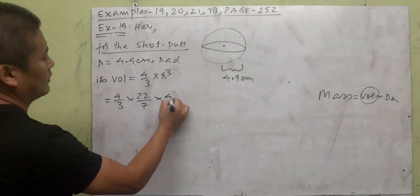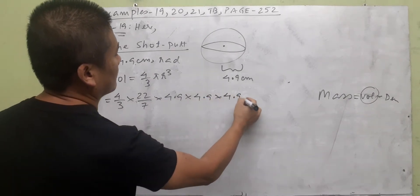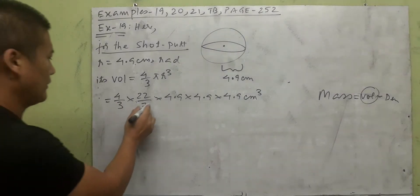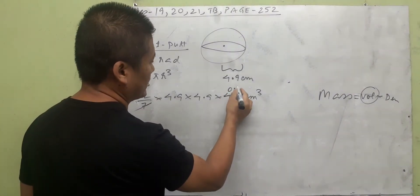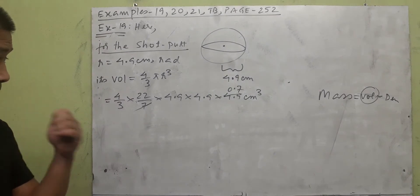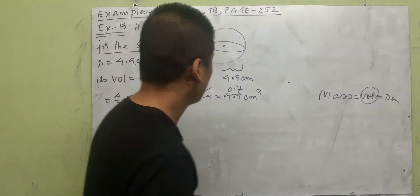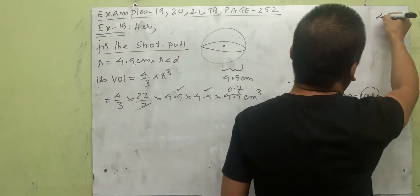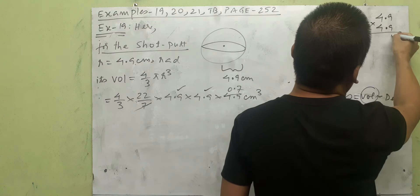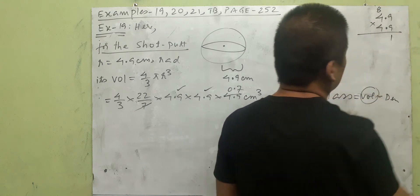We substitute r as 4.9, so we have 4.9 three times (r cubed), and the unit will be centimeter cube since it's volume. Now let us multiply these values patiently. First, 4.9 multiplied by 4.9: 9 times 9 is 81, carry 8; 9 times 4 is 36, plus 8 gives 44.